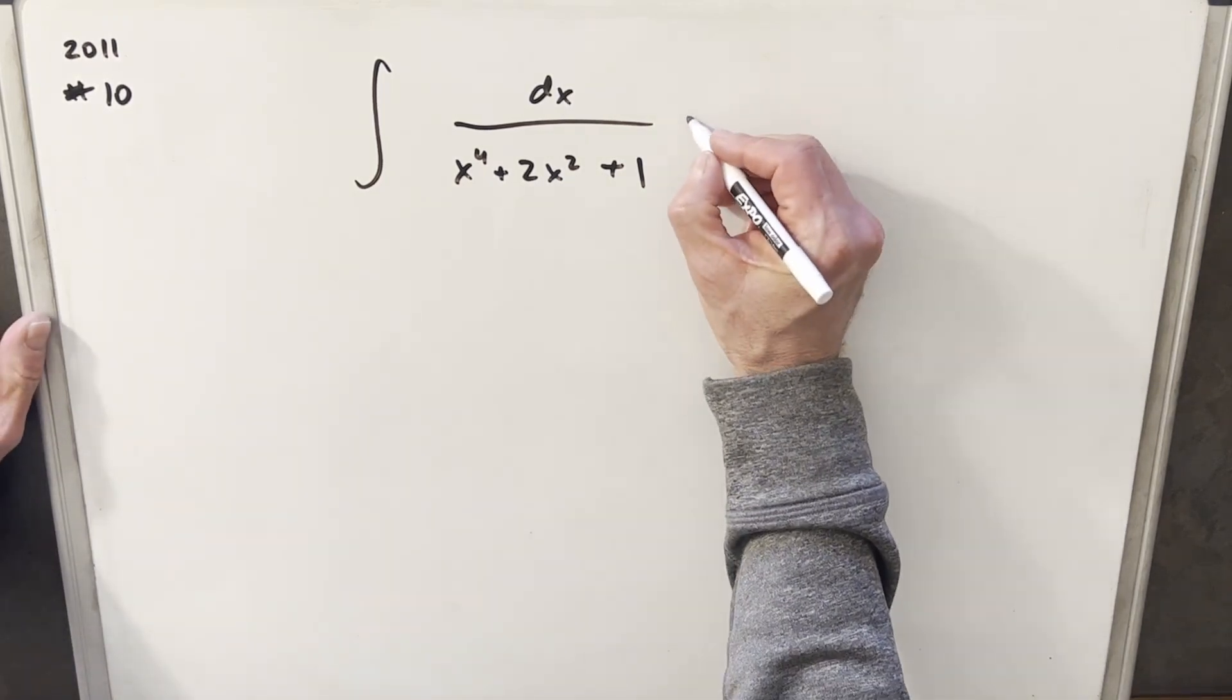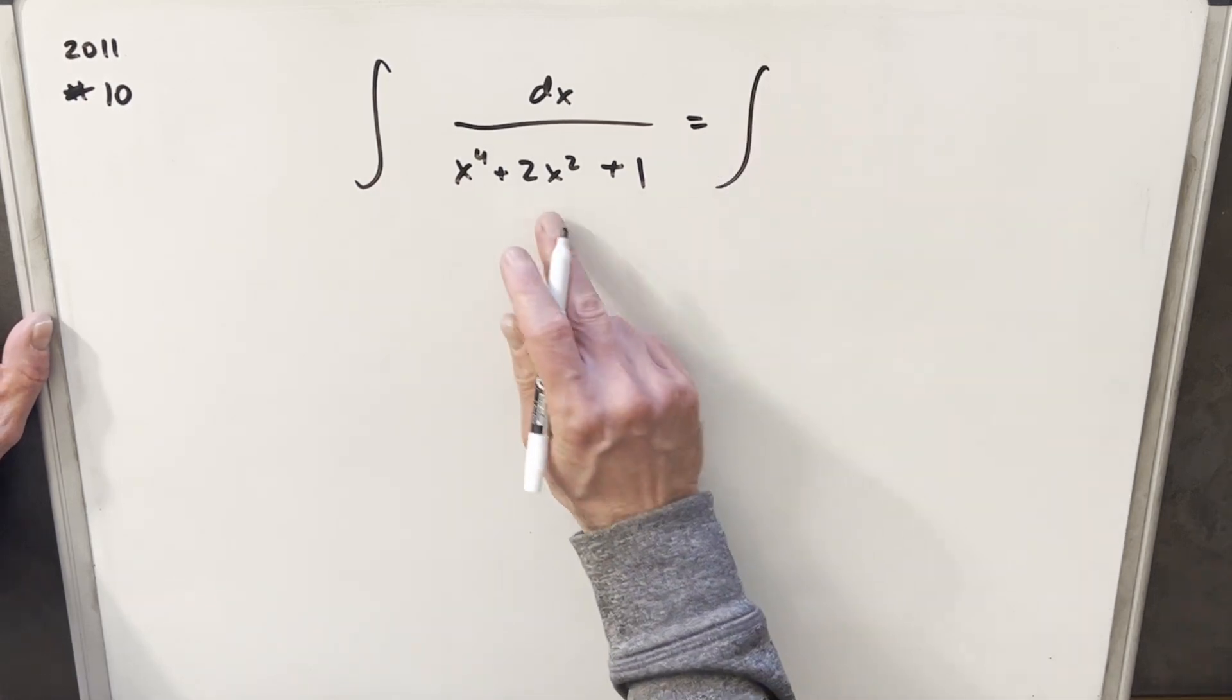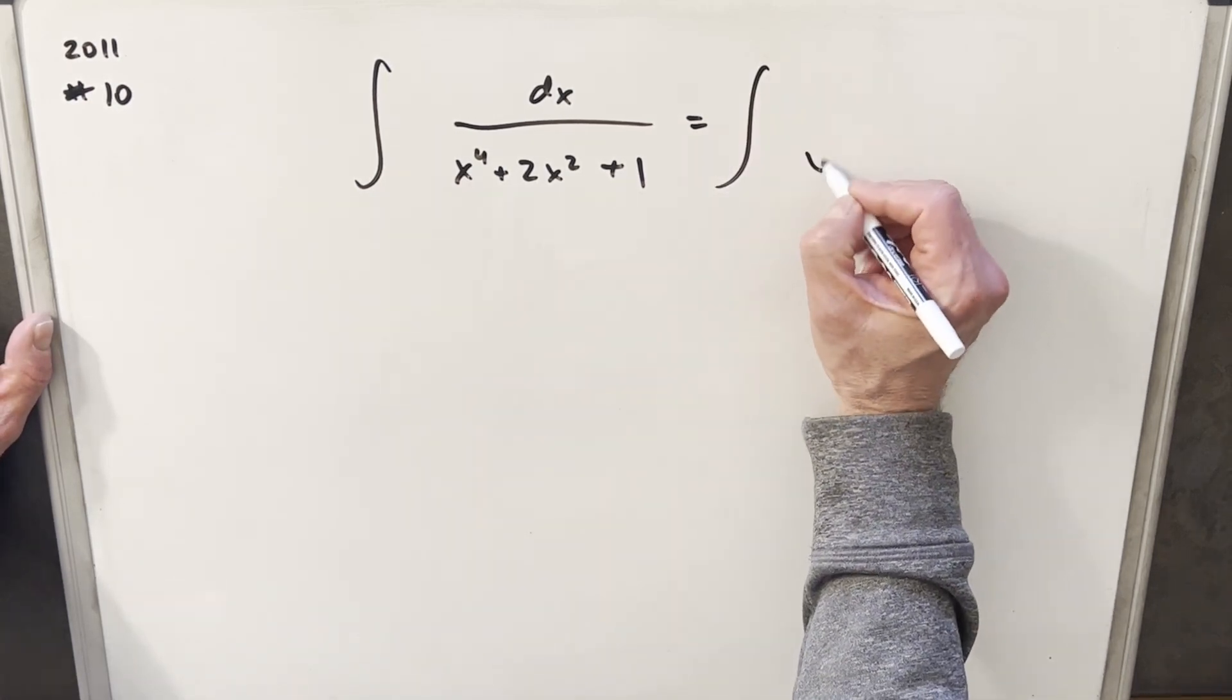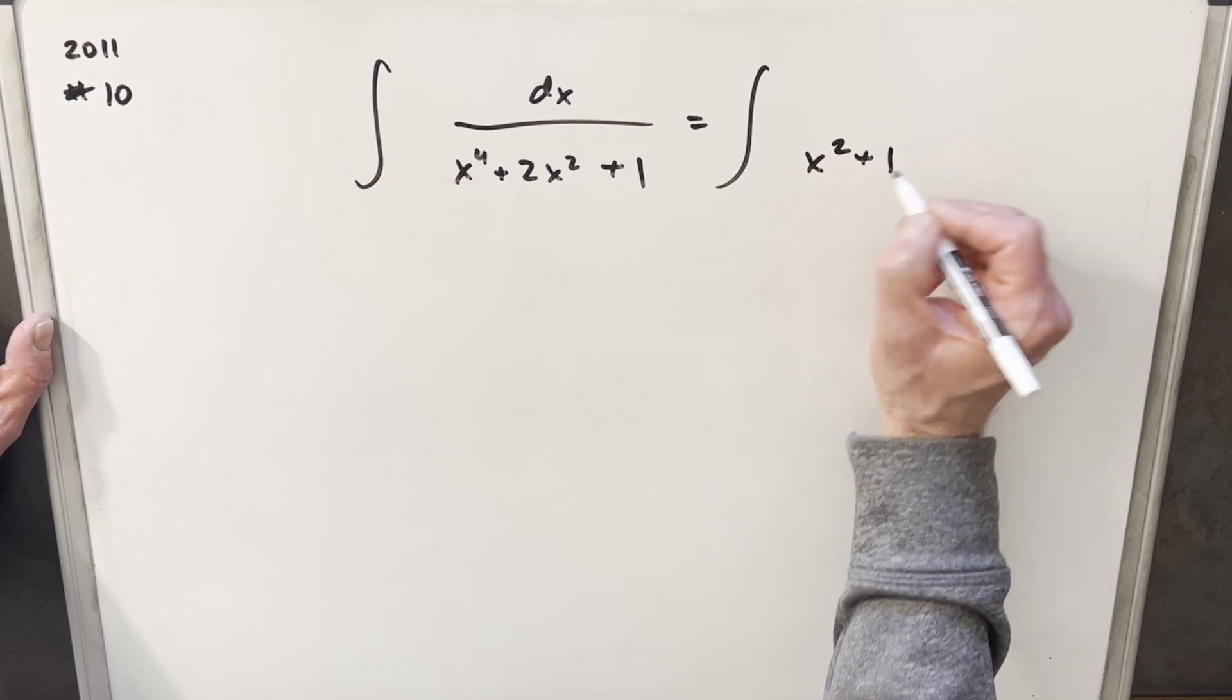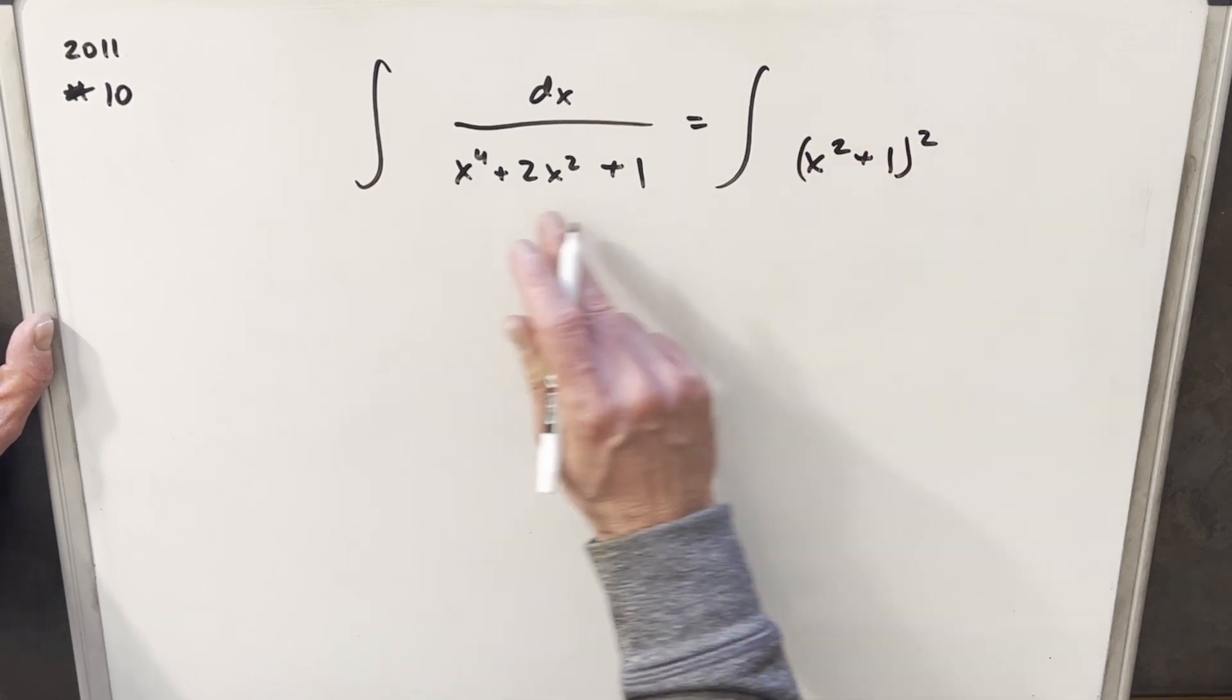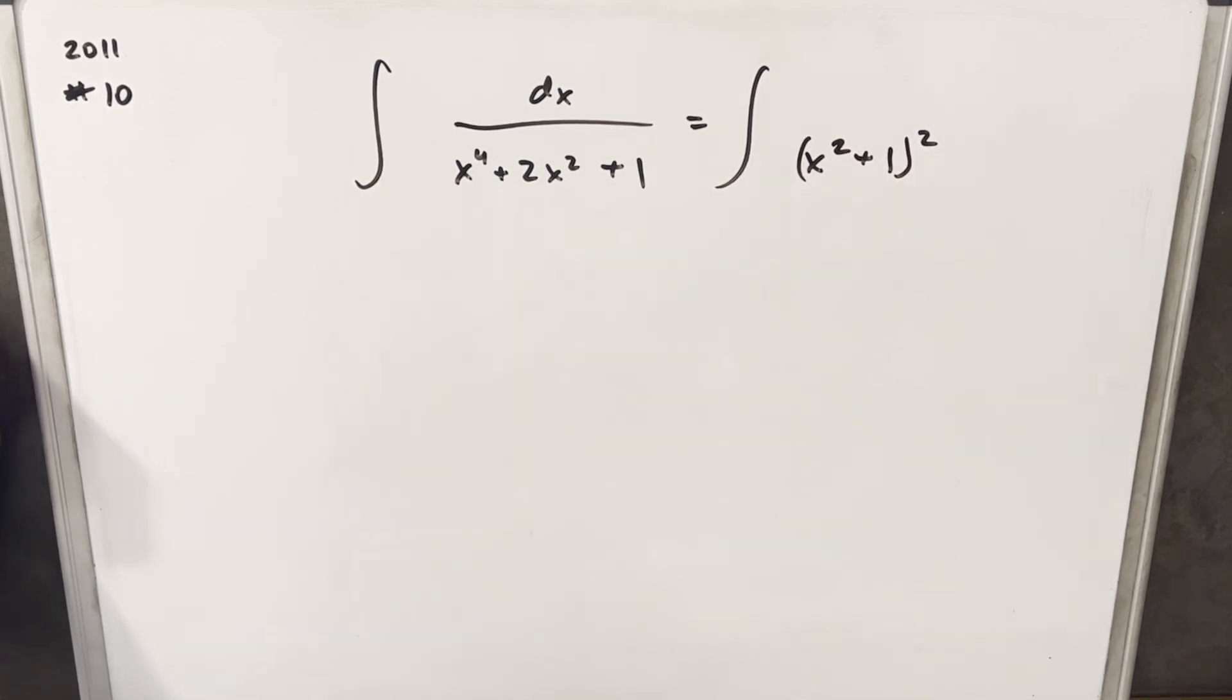All I'm going to do to start is just factor this denominator and rewrite it. So let's just notice that if we write this as x squared plus 1 squared, this is the same thing, just multiplying that out.